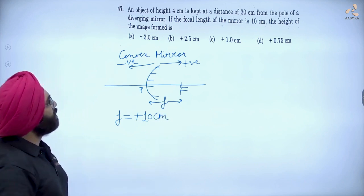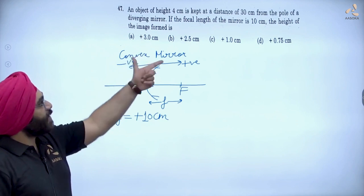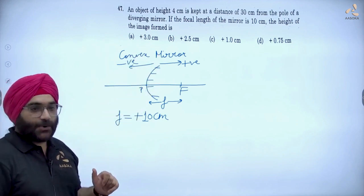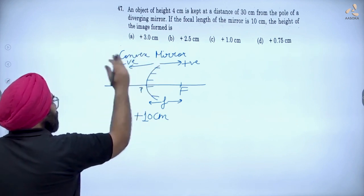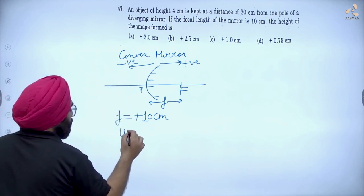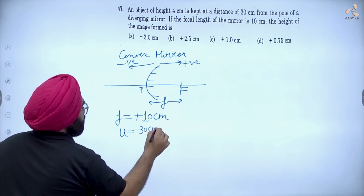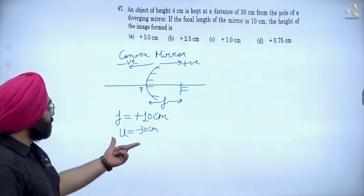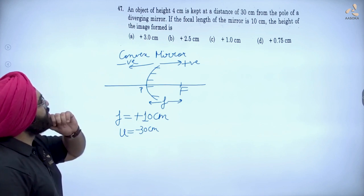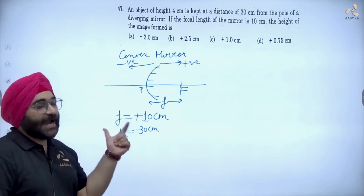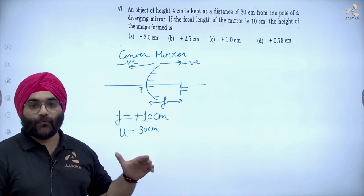If we note down, this is the object distance from the pole of the mirror. We need to find the location of the image — I will show the location of the image.